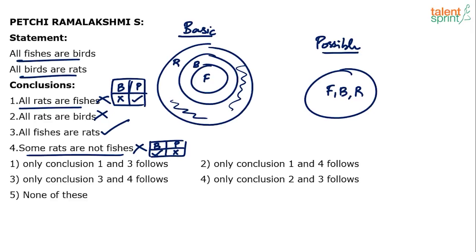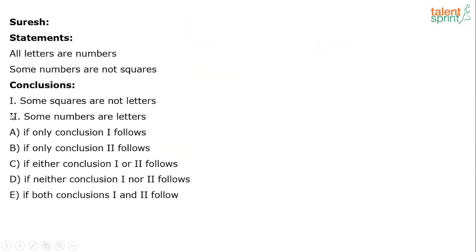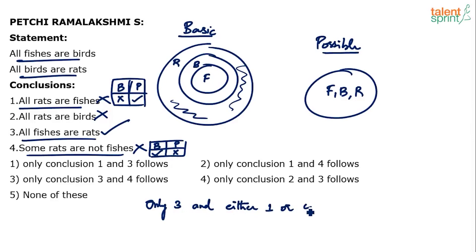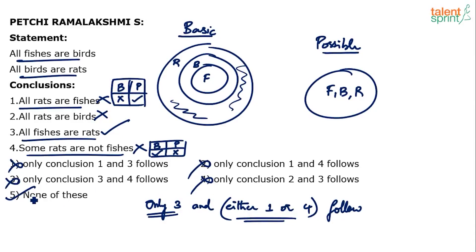And 3 definitely follows. All fishes are rats definitely follows. 2 definitely does not follow — all rats are birds does not follow. So, your answer to this question should be: only 3 and either 1 or 4 follow. Options like only 1 and 3, only 1 and 4, only 3 and 4, only 2 and 3 are all wrong. The answer should be none of those listed options. None of these here does not mean none of the conclusions follow — it means none of the first four options are correct. Hence, option 5 is the answer: only 3 and either 1 or 4 follow.